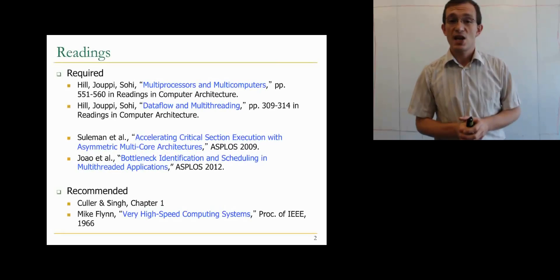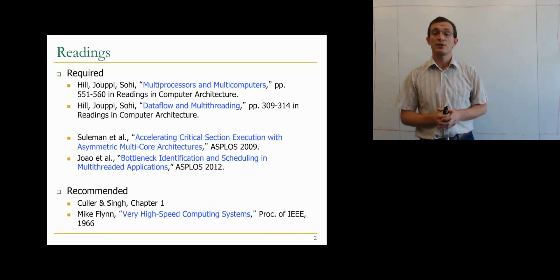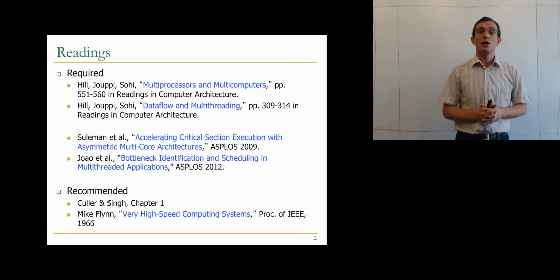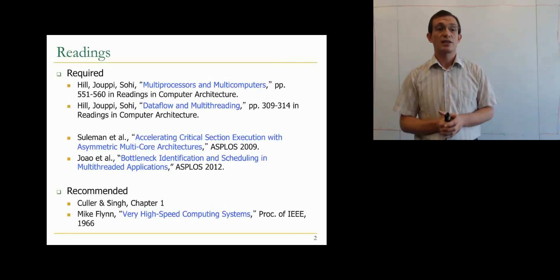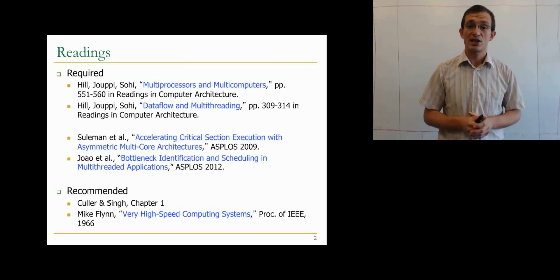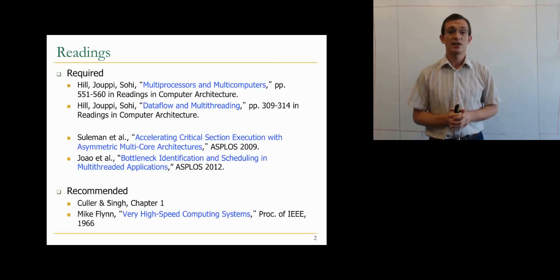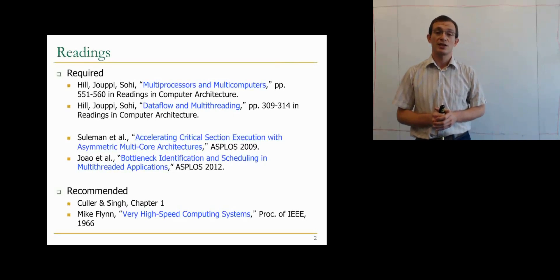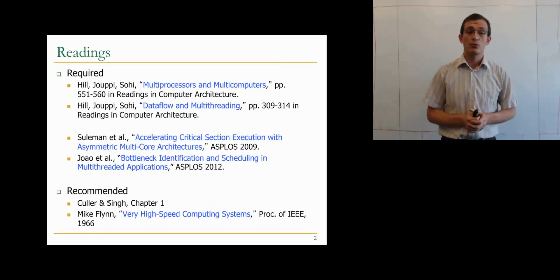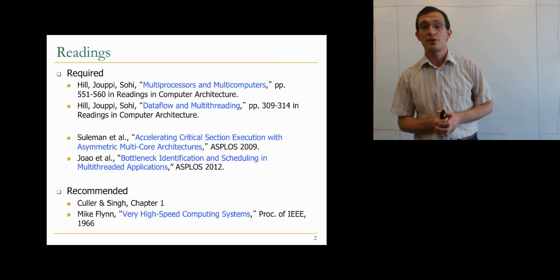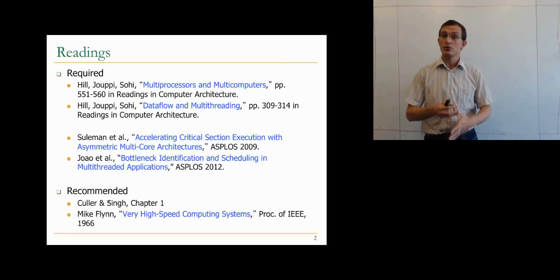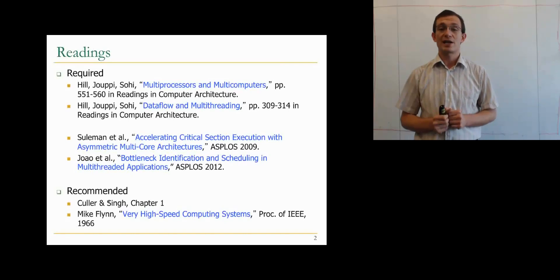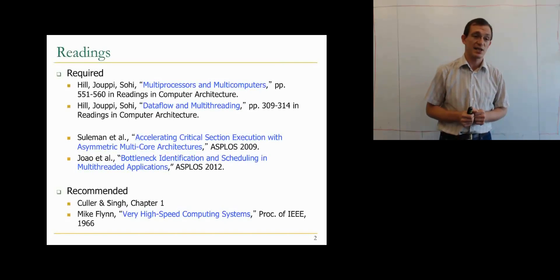The second reading is the chapter on data flow and multi-threading. Even though we're not going to cover data flow, and we're going to touch on multi-threading just a little bit in this lecture, that's a good chapter to read. The next two are important issues in multiprocessing today — they look into asymmetric multi-core architectures. The first is a paper from ASPLOS 2009 on accelerating critical section execution in asymmetric multi-core architectures, and the second is an ASPLOS 2012 paper that generalizes this approach.